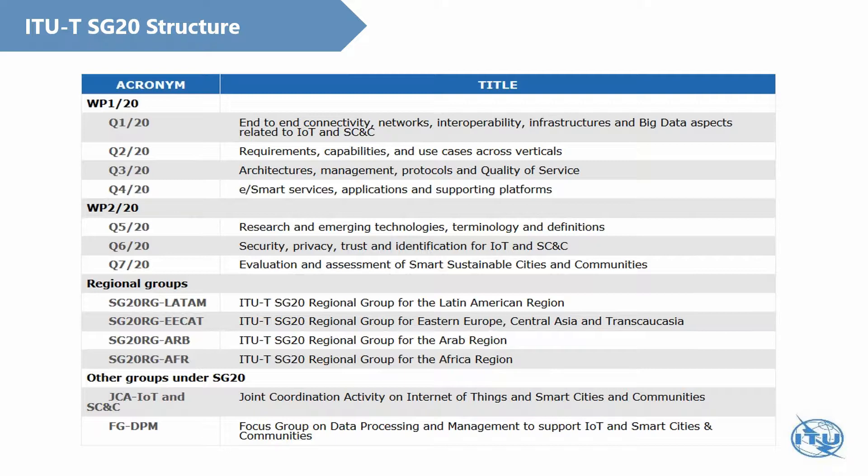Question 1 is about end-to-end connectivities, interoperability, and big data aspects. Question 2 is about requirements, capabilities and use cases across verticals. Question 3 addresses study about IoT and smart city architectures, management, verticals and QoS. Question 4 is mainly focusing on e-services, applications, and platforms.